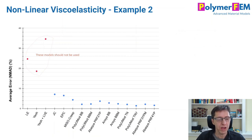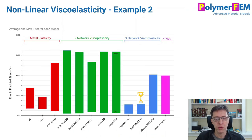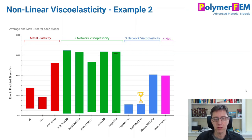To summarize the model comparisons: linear elastic, hyperelasticity, and linear viscoelasticity should not be used for these cases. Looking at average error across models, the PolyUMod TN and TNV models perform very well, and the PRF models also appear reasonable. However, when you look at maximum error, the PRF models in Abaqus reach up to 40% error, while the PolyUMod TN and TNV models stay around 10% maximum error — significantly better overall prediction quality.